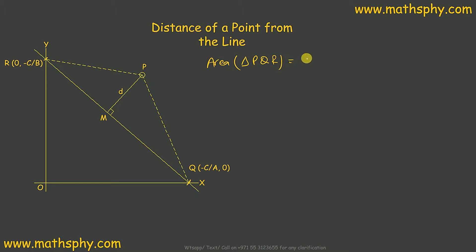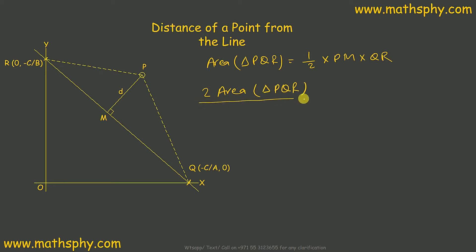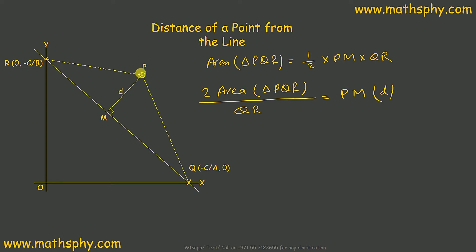The area of triangle PQR equals half times the perpendicular height PM times the base QR. Rearranging, PM equals two times the area of triangle PQR divided by QR. So d equals 2 × area(PQR) / QR. We need to find the area of triangle PQR and the length of QR to determine the distance PM of point P from the line.